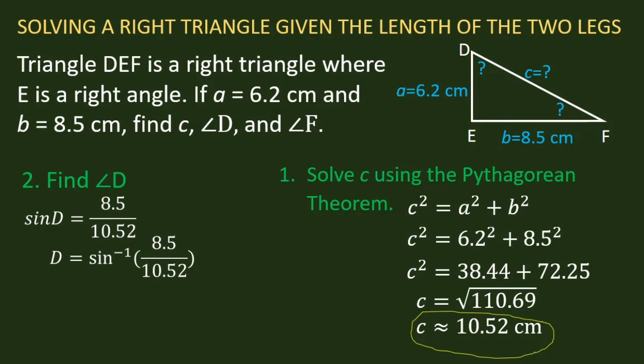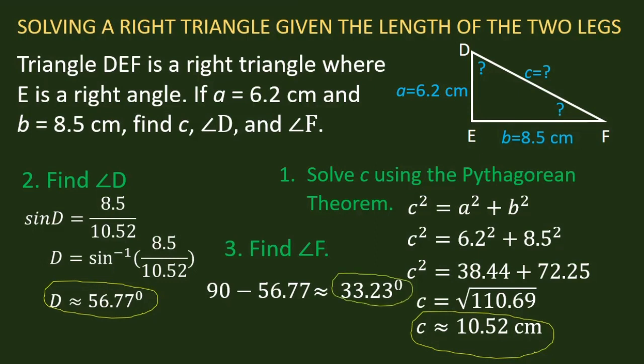Now we look for angle F. We know that angle E is already 90 degrees, so the remaining angles of the triangle total 90 degrees. We already have 56.77 degrees for angle D, so 90 - 56.77 = 33.23 degrees. That's angle F.